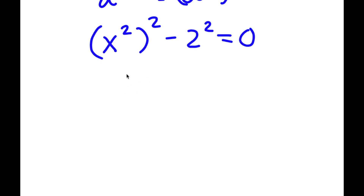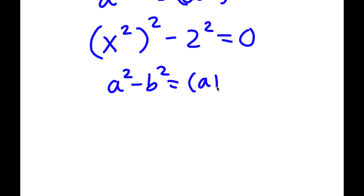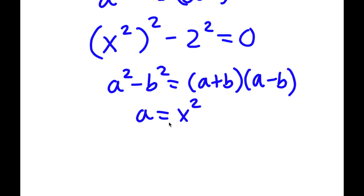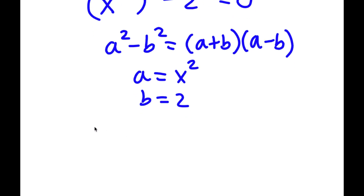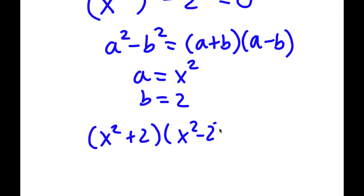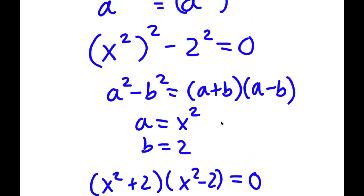Now if I have something in the form a squared minus b squared, this is equal to a plus b times a minus b. So in this case a is x squared and b is 2, so I have x squared plus 2 times x squared minus 2 is equal to 0.